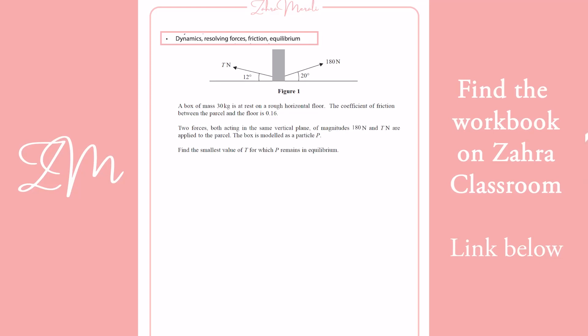Right, so we're going to look at this question where we're resolving forces primarily. We've got a box of 30 kilograms at rest on a rough horizontal floor. So we've got 30g going down. Wherever we've got something going down, we're also going to have a resultant force going up.